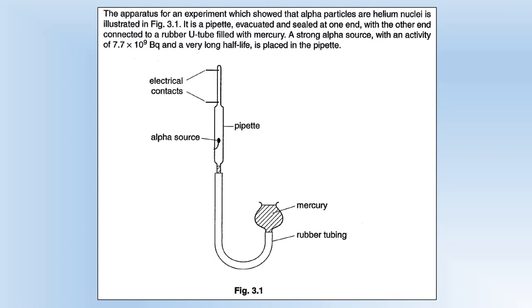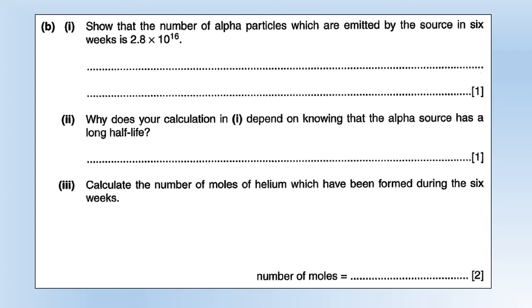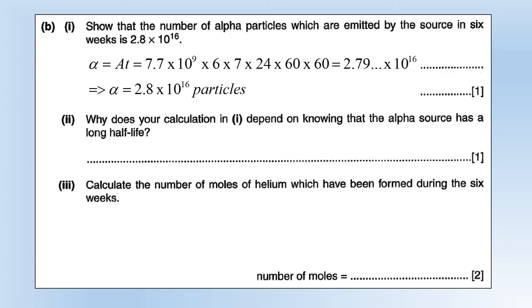The apparatus for an experiment to show that alpha particles are helium nuclei is illustrated by the diagram. We've got a pipette which is evacuated so it's a vacuum and sealed at one end, the other end connected to a rubber u-tube filled with mercury. A strong alpha source with an activity of 7.7 times 10 to the 9 becquerel and a very long half-life is placed inside the pipette. Show that the number of alpha particles which are emitted by the source in six weeks is 2.8 times 10 to the 16. Using the fact that half-life is long, we can assume the activity remains pretty much fixed, so just multiply the activity by the time in seconds gives us 2.8 times 10 to the 16. We needed to know it had a very long half-life so we can assume the activity is constant during that period.